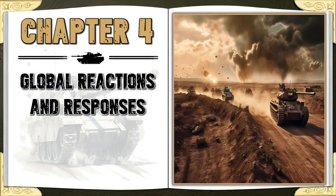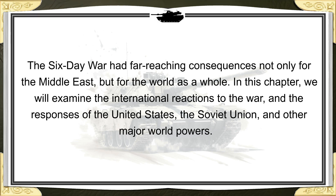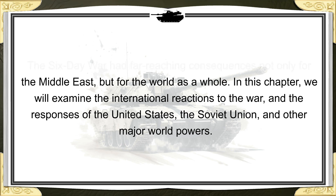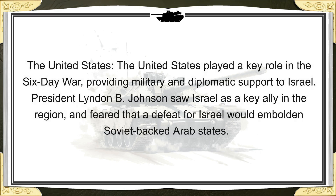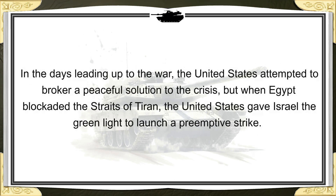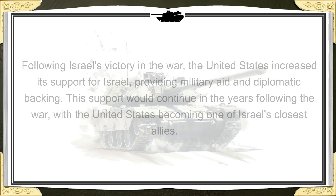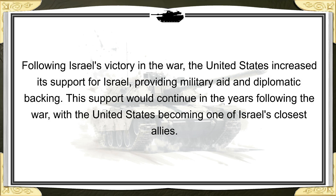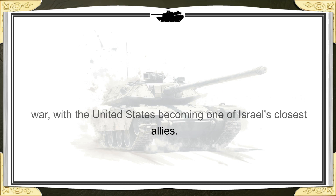Chapter 4: Global Reactions and Responses. The Six-Day War had far-reaching consequences not only for the Middle East, but for the world as a whole. The United States played a key role in the Six-Day War, providing military and diplomatic support to Israel. President Lyndon B. Johnson saw Israel as a key ally in the region and feared that a defeat for Israel would embolden Soviet-backed Arab states. When Egypt blockaded the Straits of Tiran, the United States gave Israel the green light to launch a preemptive strike. Following Israel's victory, the United States increased its support, providing military aid and diplomatic backing, becoming one of Israel's closest allies.